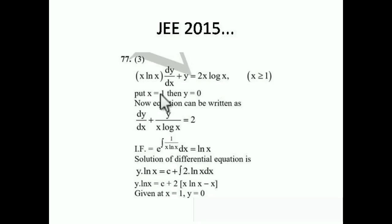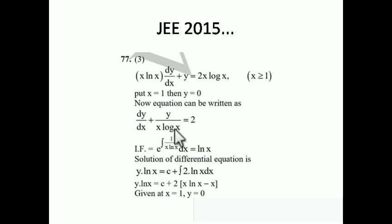The integrating factor = e^(∫1/(x·log x) dx). Since the derivative of log(x) in the denominator is 1/x in the numerator, the integral is log|log(x)|. So the integrating factor = e^(log(log x)) = log(x). The solution is y · log(x) = ∫2 · log(x) dx + c, which gives y · ln(x) = 2(x·ln(x) − x) + c.